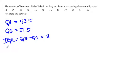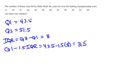An outlier is anything defined to be smaller than Q1 minus 1.5 times the interquartile range, which in this case would be 43.5 minus 1.5 times 8, which equals 31.5. So any number less than 31.5 is considered an outlier.